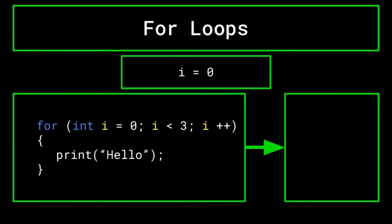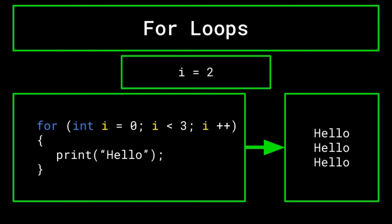Take this for loop for example. It first declares an integer i and initializes it to zero. It then sets the condition that i must be less than three. Finally, it sets the operation to i++, which will increment i by one each time the loop is run. The instructions inside the for loop tell the computer to print hello. To begin, i is set to zero. As zero is less than three, the loop will run, and it prints hello. i is then incremented to one, and since one is less than three, the loop runs again. Next, i is incremented to two, and the instructions are carried out once more. i is then incremented to three, which is not less than three, and thus the for loop is complete, and the computer moves on to whatever comes next in the program.